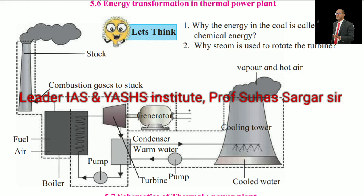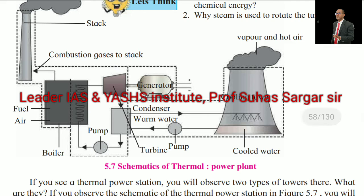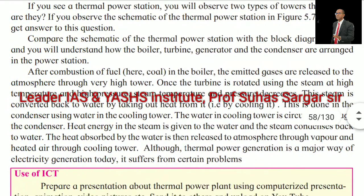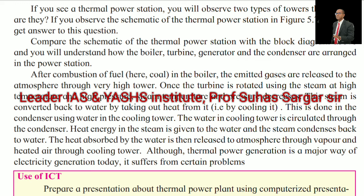Let's think about a few questions: Why is the energy in coal called chemical energy? Why is steam used to rotate the turbine? See the pictures of the schematic of the thermal power plant. If you observe the schematic of the thermal power station, you will see two types of towers. Comparing the schematic with the block diagram, you will understand how the boiler, turbine, generator and condenser are arranged in the power station.